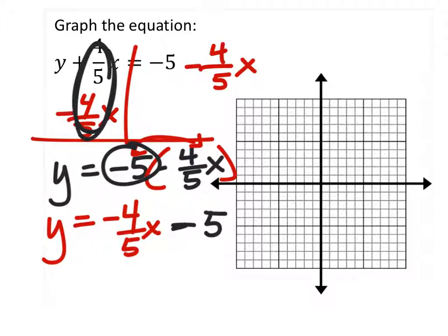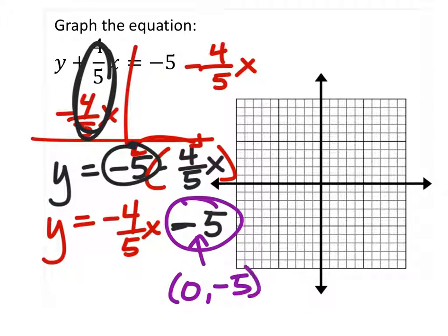So the first point I have here is my y-intercept, which is 0. It takes the operation to its left, addition or subtraction. So that's 0, negative 5, which would be right here.